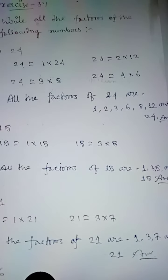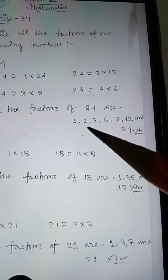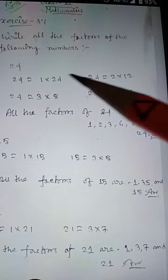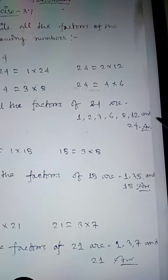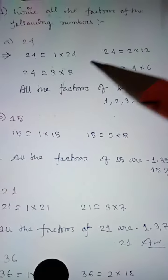All the factors of 24 are 1, 2, 3, 4, 6, 8, 12, and 24.